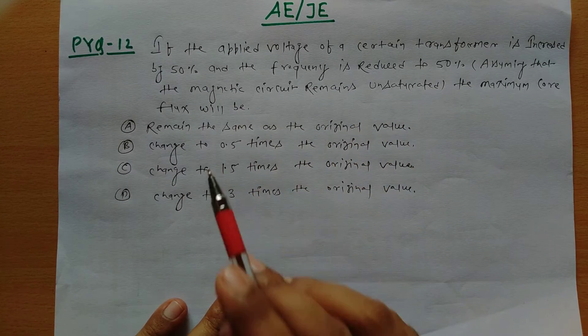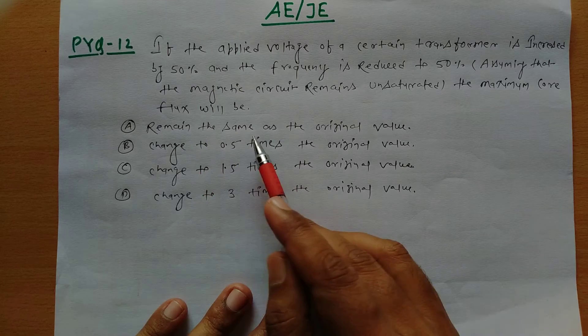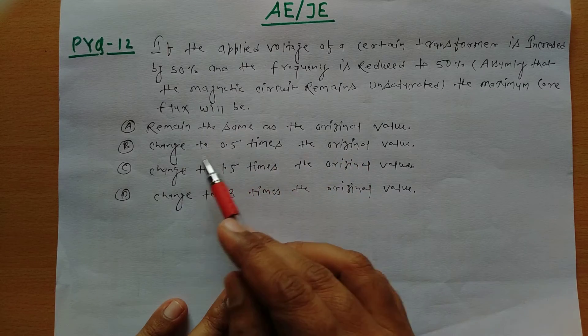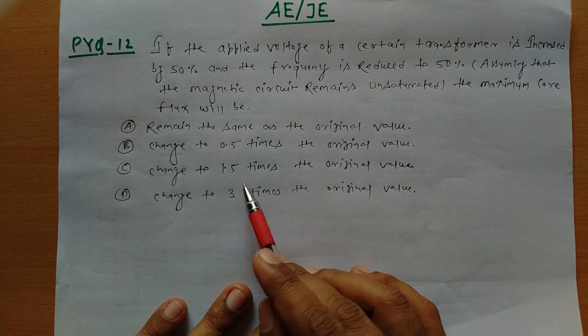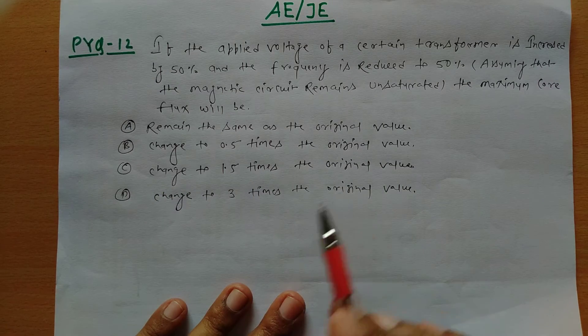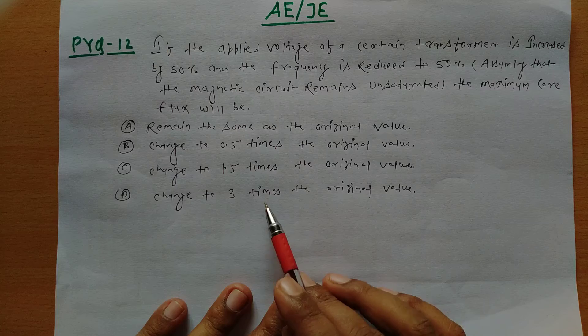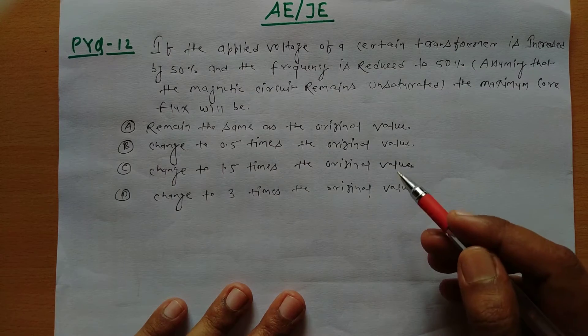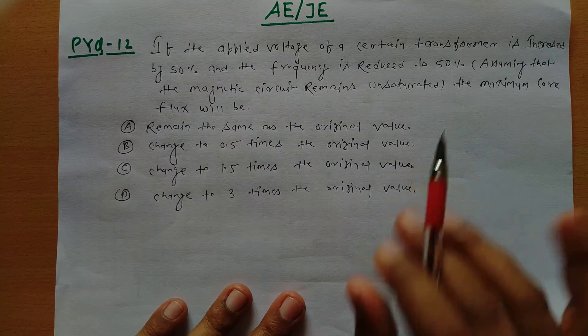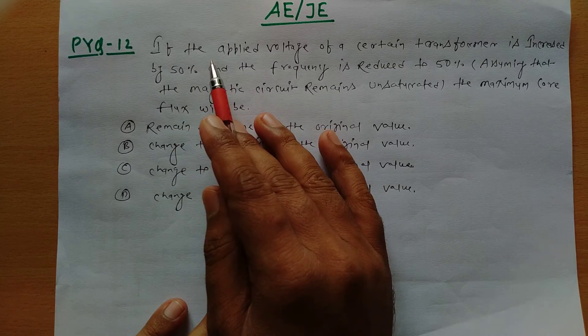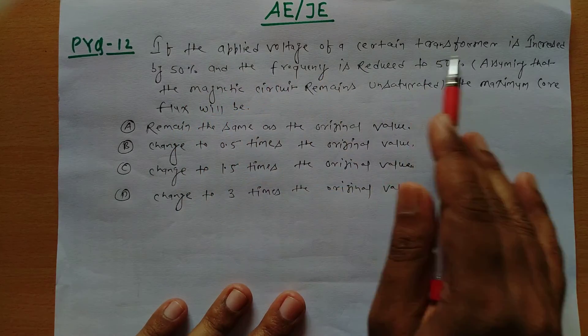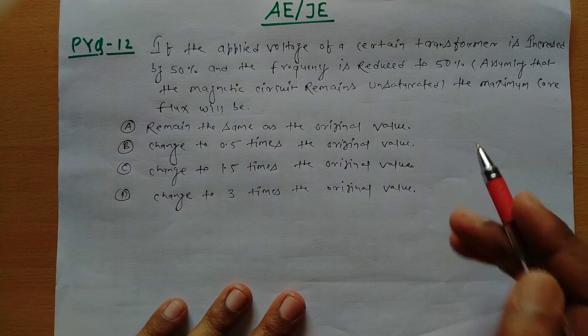Option A: remain the same as the original value. Option B: change to 0.5 times the original value. Option C: change to 1.5 times the original value. And Option D: change to 3 times the original value. Now we'll read the question carefully: if the applied voltage of a certain transformer is increased by 50 percent...